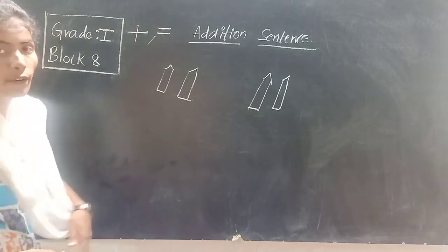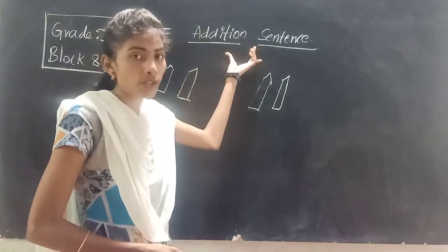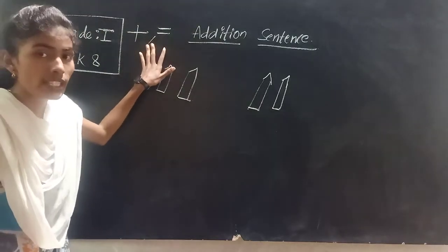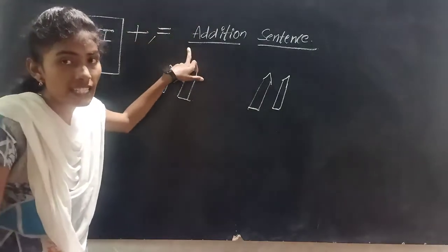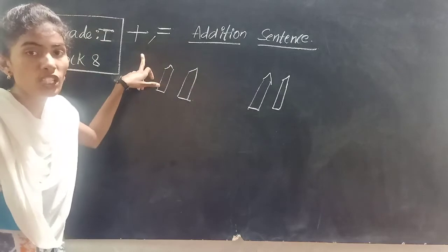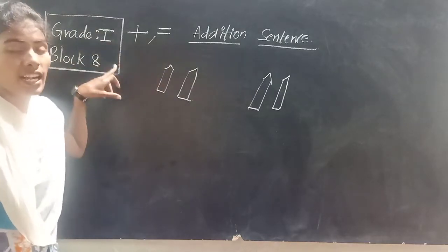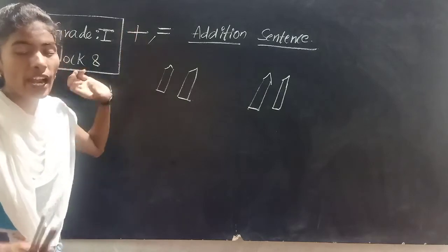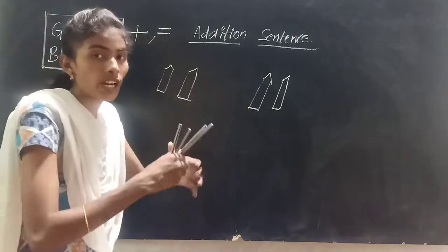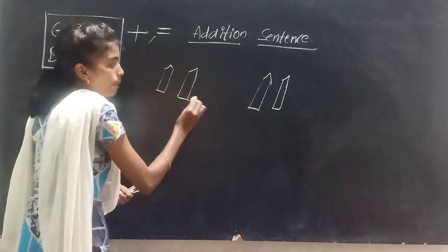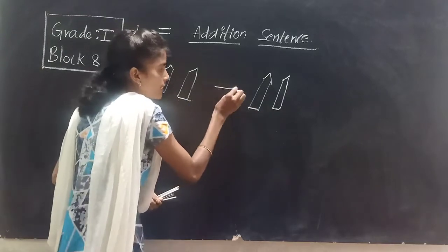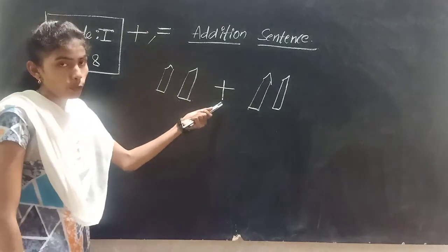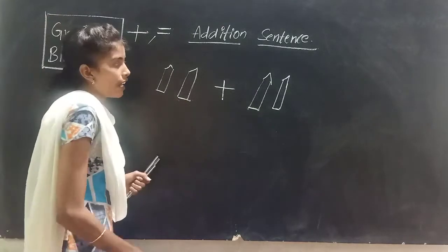What is this symbol, children? Plus. So what is the addition symbol? Plus — every time. This is the constant symbol. Addition means every time we have to write plus. So I am adding these two pencils, these two numbers, so we have to put the plus sign.